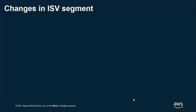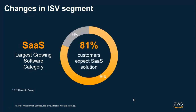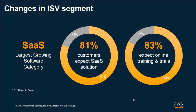The ISV segment is going through a rapid transformation to move to a SaaS delivery model. We sponsored a Forrester survey in which 300 ISVs participated, and the survey provided some valuable insights I'd like to share today. Forrester reported that when it comes to software portfolios, SaaS is the largest growing and local on-premise installation is the fastest declining category. ISVs stated that 81% of their customers expect a SaaS version of their desktop applications, and 83% expect their ISVs to provide software training and trials in an online format.